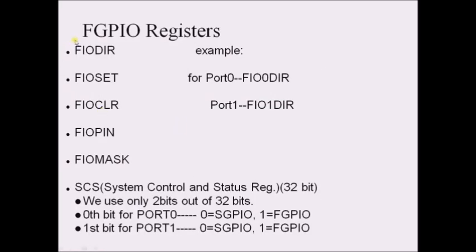Coming to the fast GPIOs, the GPIO block is divided into two parts: fast GPIOs and slow GPIOs. Up to now we have discussed slow GPIOs. For fast GPIOs we have fast direction register, fast set register, fast clear register, and fast PIN register. Additionally, there is a MASK register — an intermediate register which connects the fast GPIO block with the PINSEL. When the MASK bit is HIGH, there is no effect on the pin; when it is zero, there is a direct effect.